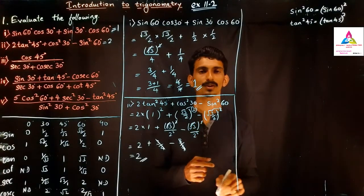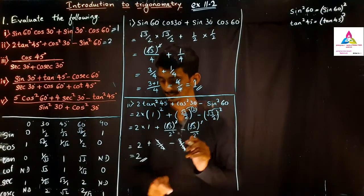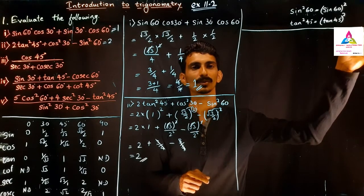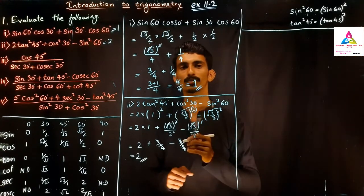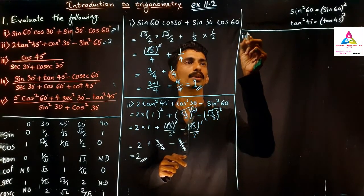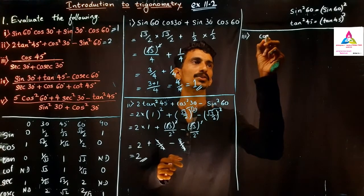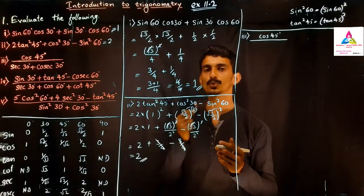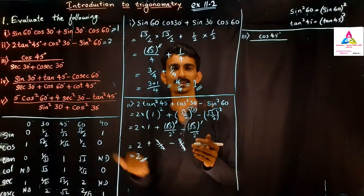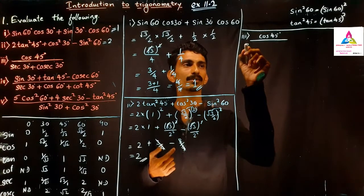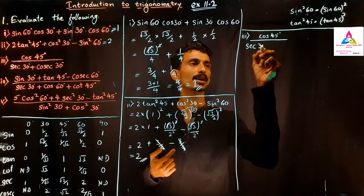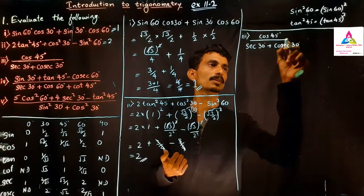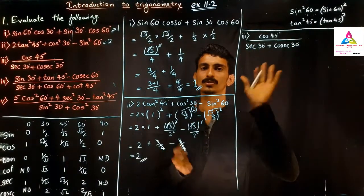Now for Question 3, you need to concentrate carefully. The question is cos 45° divided by (sec 30° + cosec 30°). Some students find this difficult because a root value appears in the denominator, requiring the use of the rationalizing factor.